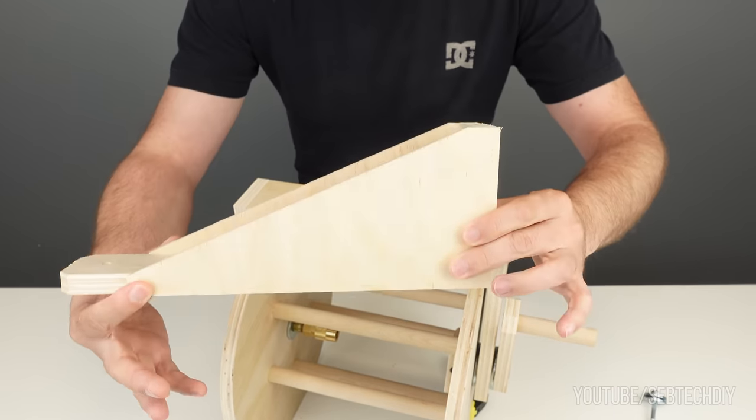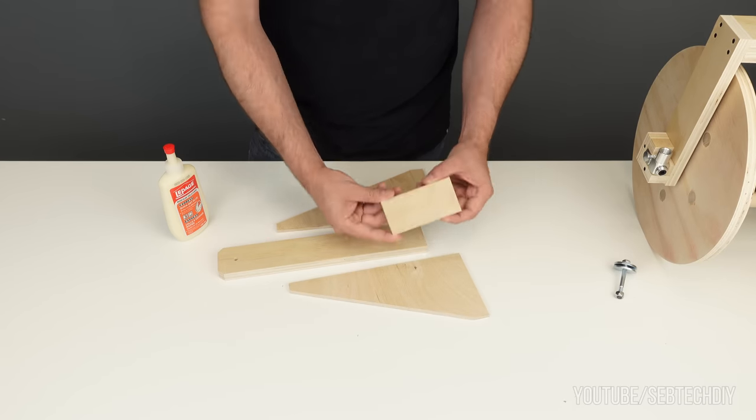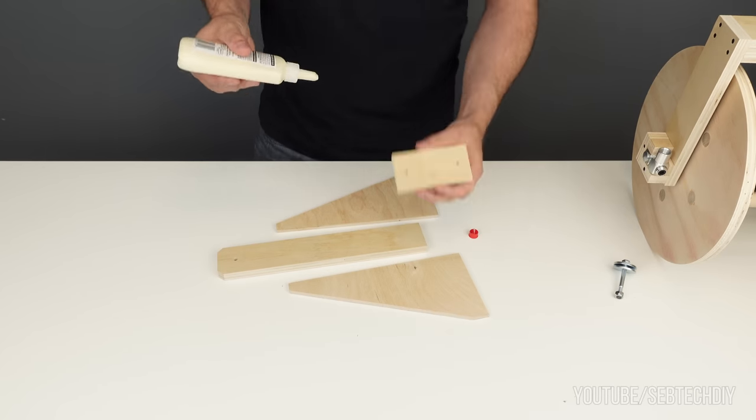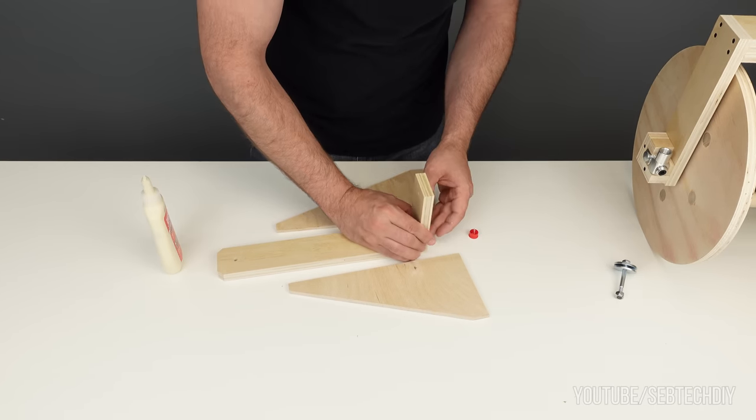The bracket is made from plywood and the two triangle pieces will give the needed support strength. Using some wood glue, some screws and some nails, I put everything together.